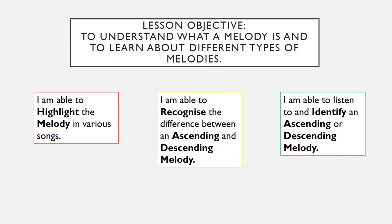For today's lesson, the objective is to understand what a melody is and to learn about different types of melodies. At the very least, today you should be able to highlight the melody in various songs. In the yellow box, you should be able to recognise the difference between an ascending and a descending melody, and in the green box, you should be able to listen to and identify whether a melody is ascending or descending.